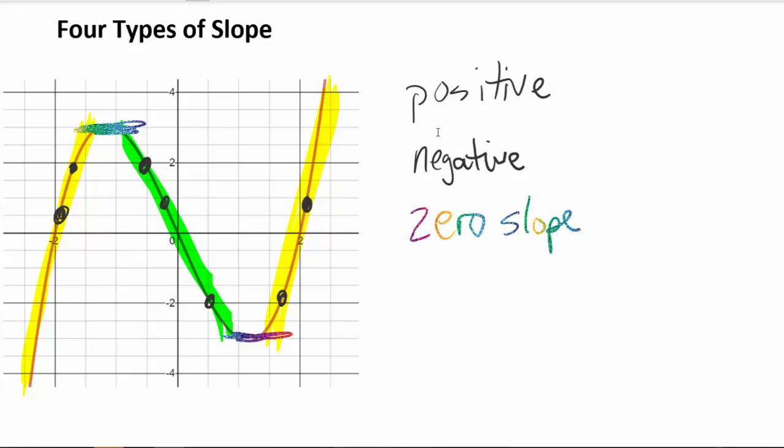Now, similarly to positive, negative and zero slope, we've got one other type of slope, and it's not really notated here in this one, but we could also have a vertical line. And if we had a vertical line, if we had a line that was vertical like that, we know that that has no slope.